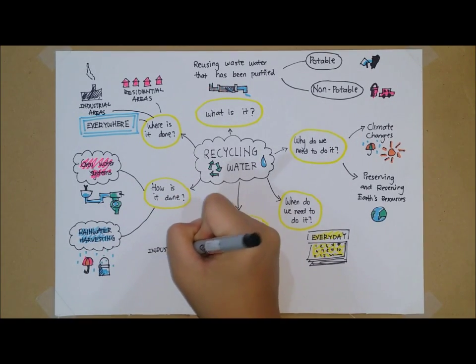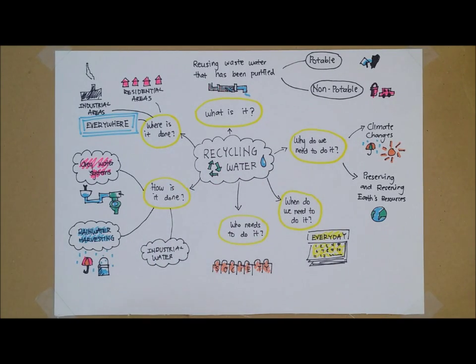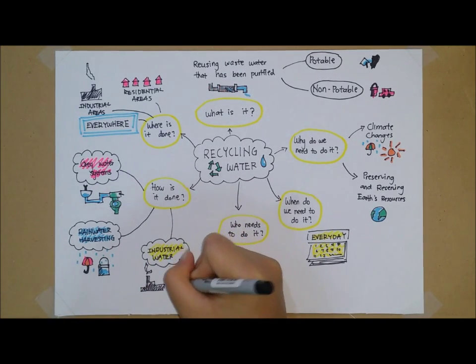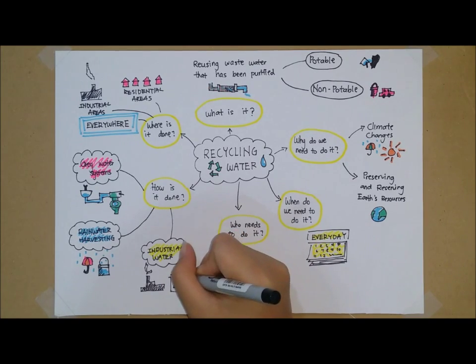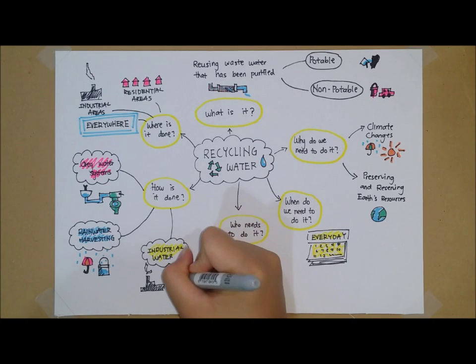Lastly, there's industrial water. Industries usually have wastewater treatment systems, so treated wastewater can be used as makeup water for firefighting, cooling loops, or boilers.